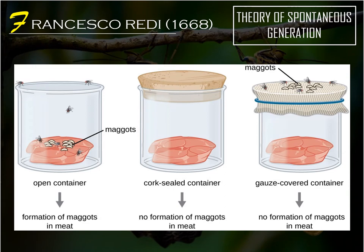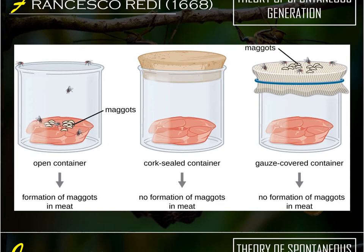In 1668, Francesco Redi experimented on fresh meat in jars. As you can see in the picture, there are three jars. The first jar with fresh meat was left open, while the second jar with fresh meat was sealed airtight, and the last jar with fresh meat was covered with cloth. After leaving it for weeks, the open jar had maggots feeding on meat, while the second jar does not show any maggots at all, and the third jar had some maggots on the cloth cover. Thus, Redi concluded that maggots can only come from something alive, and he was one of the scientists to disprove the theory of spontaneous generation.